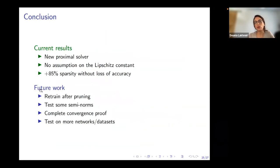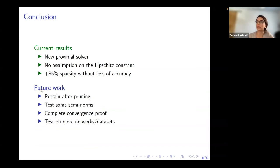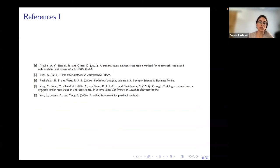All in all, we are working on a new proximal solver that differs from existing ones in that we make no assumption on the Lipschitz constant. Our preliminary results show good sparsity — hitting 85–90% targets without any loss of accuracy — and this is without any retraining, meaning we could achieve higher sparsity and recover the original accuracy by pushing pruning further and retraining at the end. We still need to test SR2 on more networks, more datasets, and with additional regularizers such as semi-norms that also have closed-form proximal subproblem solutions. Thank you all.